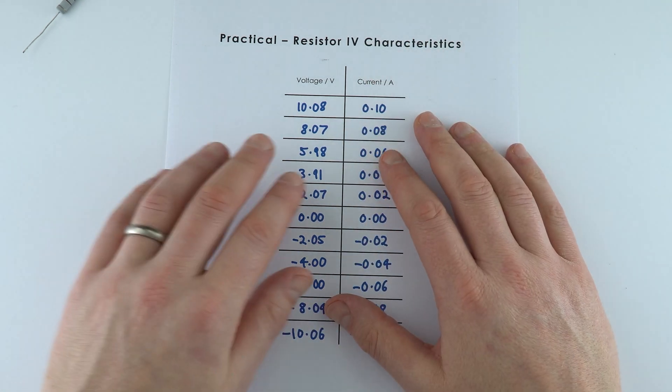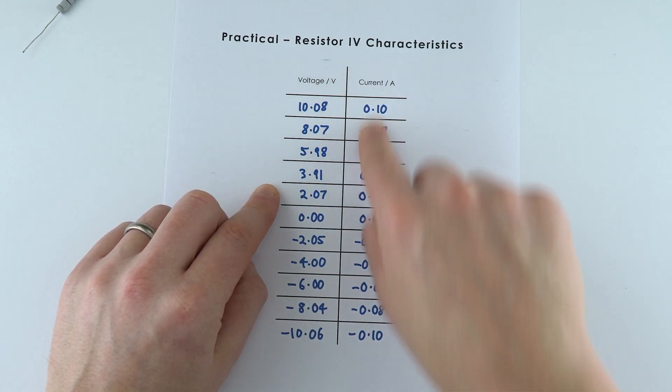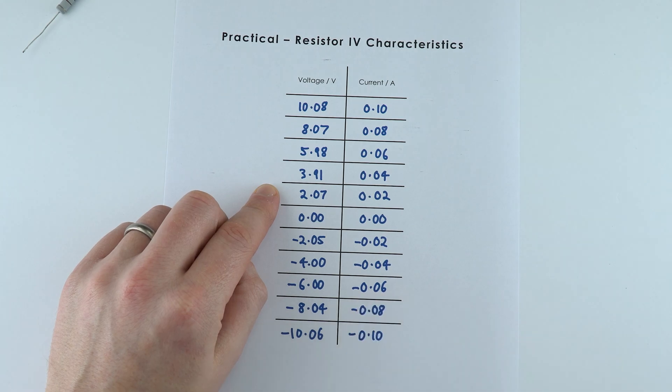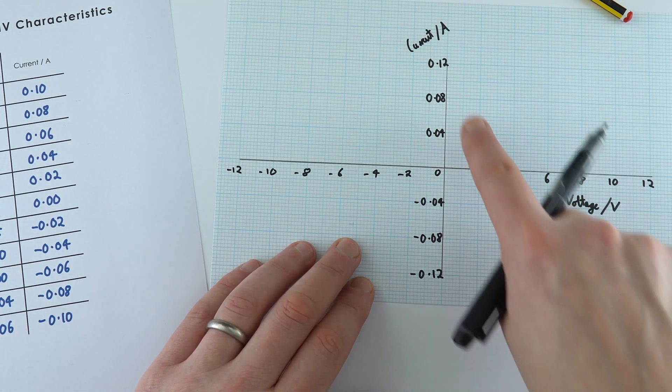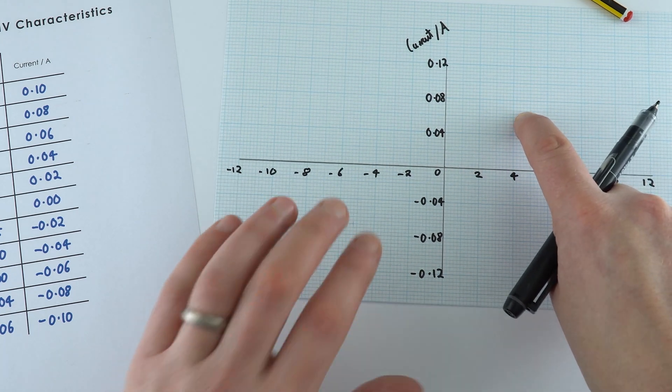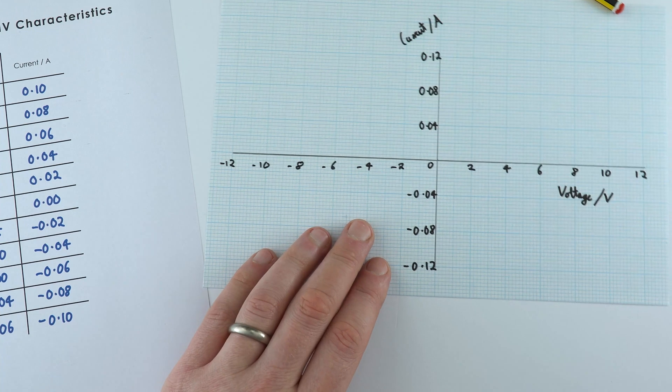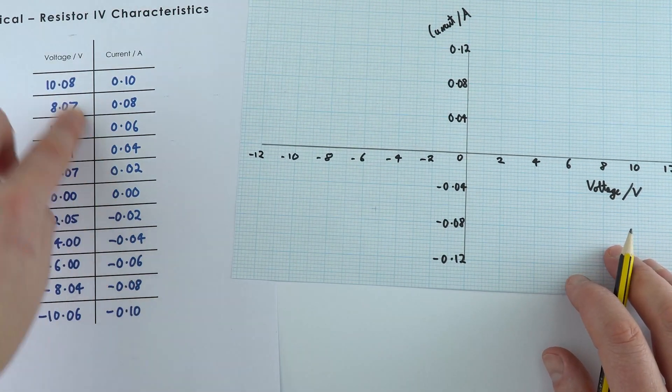When it comes to putting this onto a graph, we're going to have voltage on the x-axis and current on the y-axis. Here's my graph where we have current in amps and voltage in volts, and we can add both positive and negative values onto the same graph. We're going to plot all of this data.